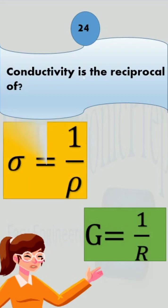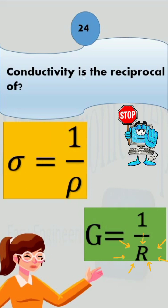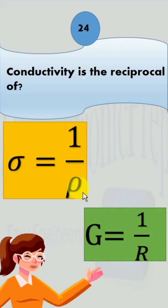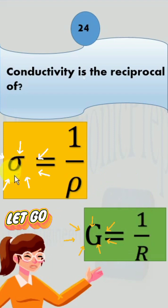Next comes resistivity and conductivity. Resistivity is a measure of a material's ability to resist the flow of an electric current. Conductivity is the measure of how well a material conducts electricity.